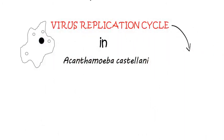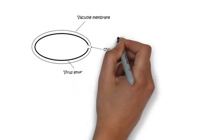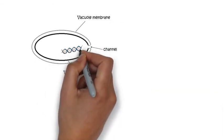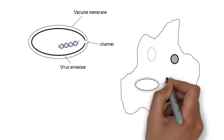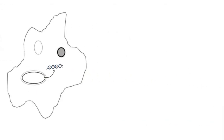The replication cycle is 10 to 15 hours long. The virus particle is first internalized by the amoeba cell in an organelle called vacuole. The envelope of the virus then fuses with the vacuole membrane creating a channel. The contents of the virus particle are emptied in the amoeba cell through this channel.